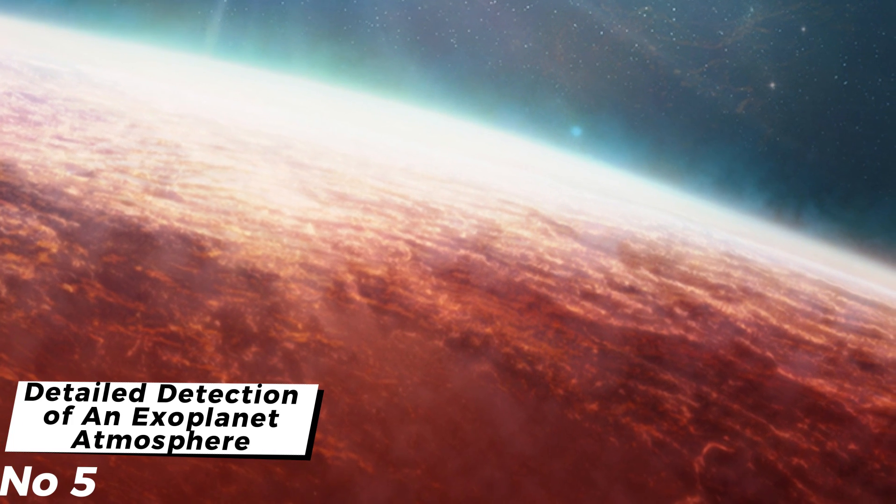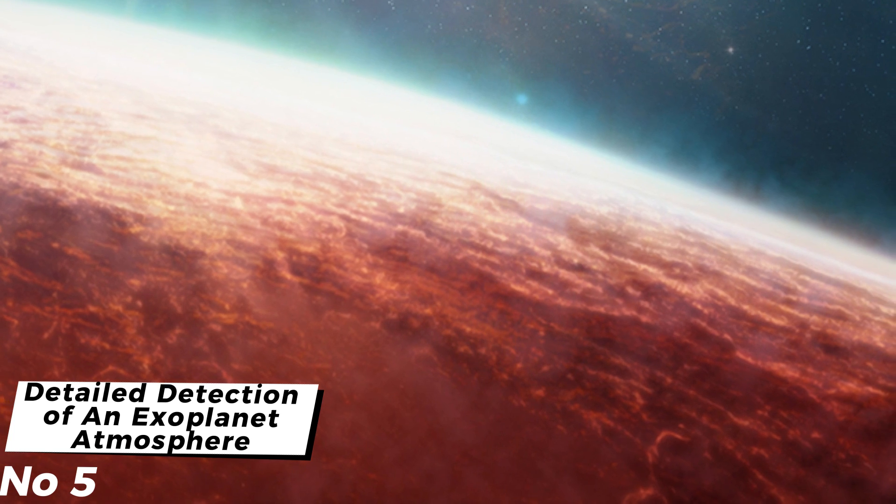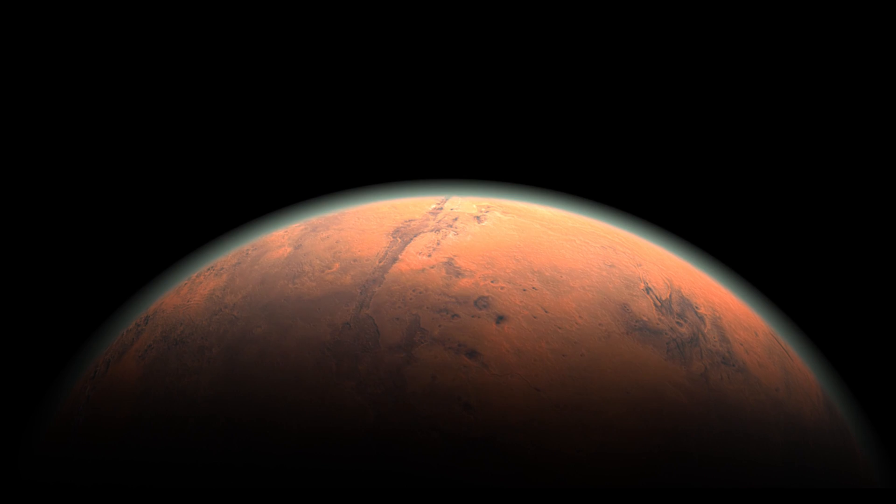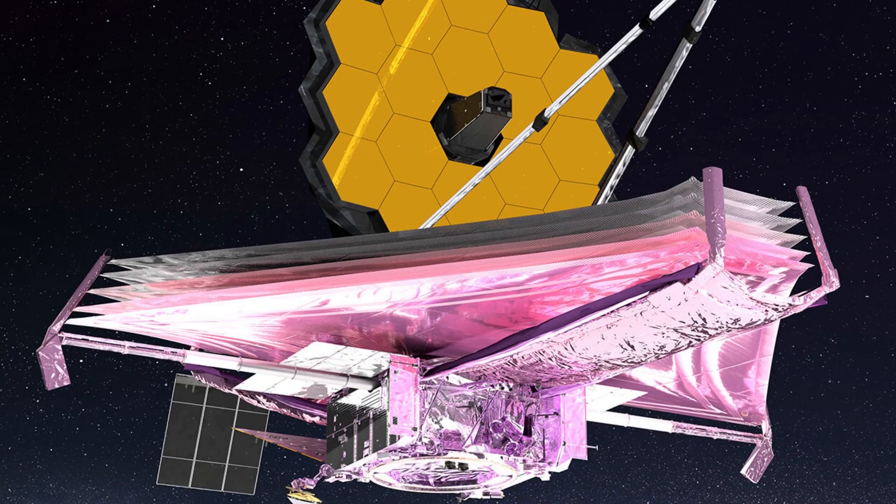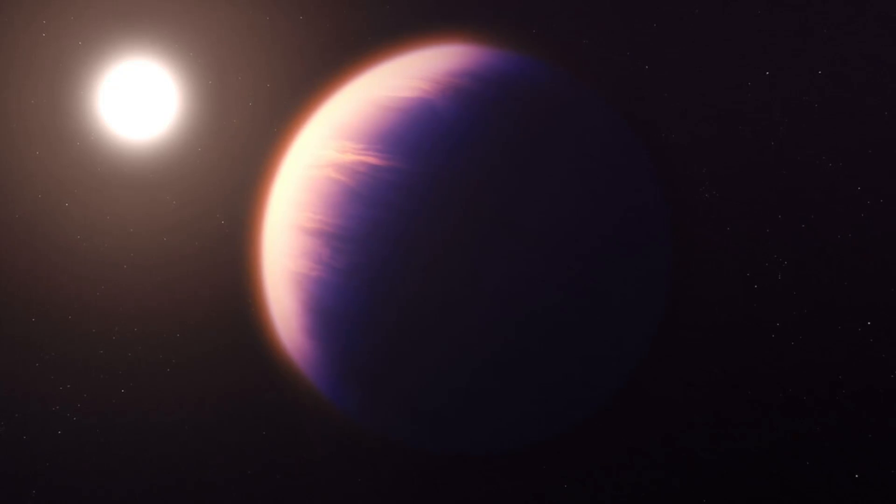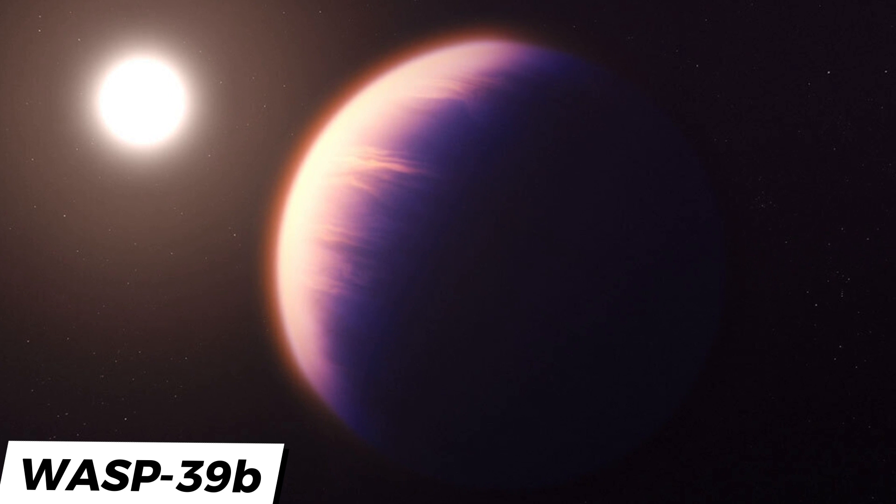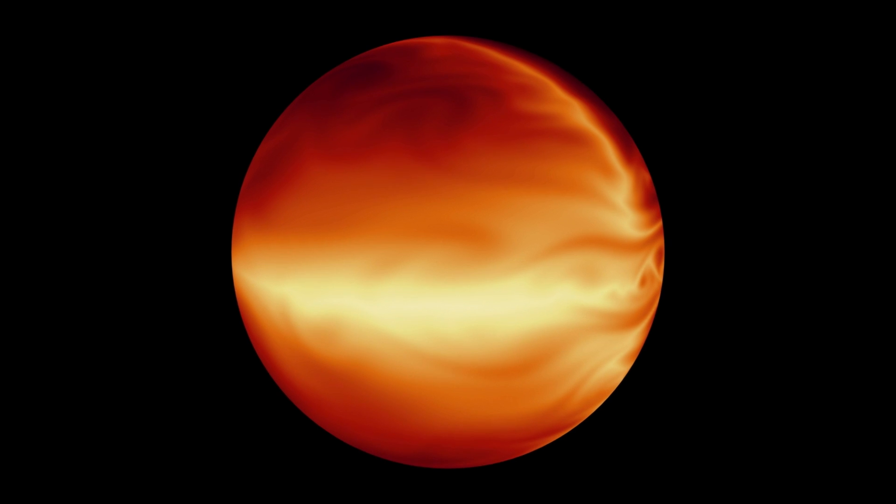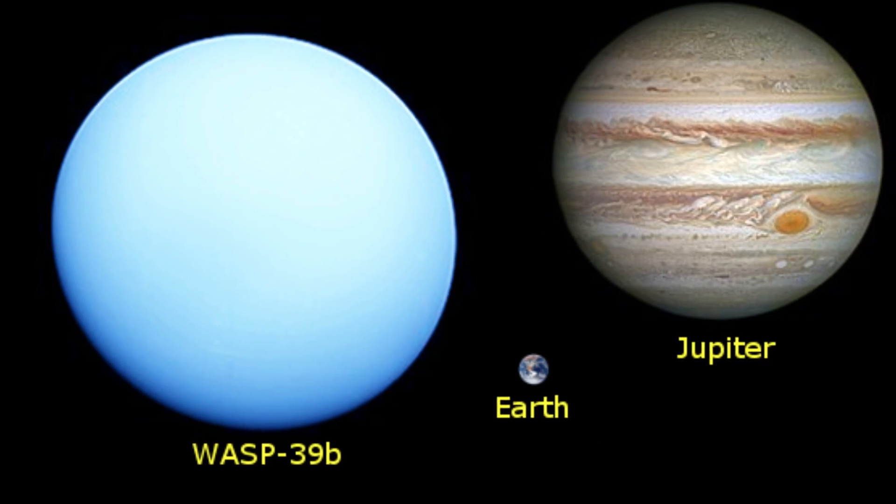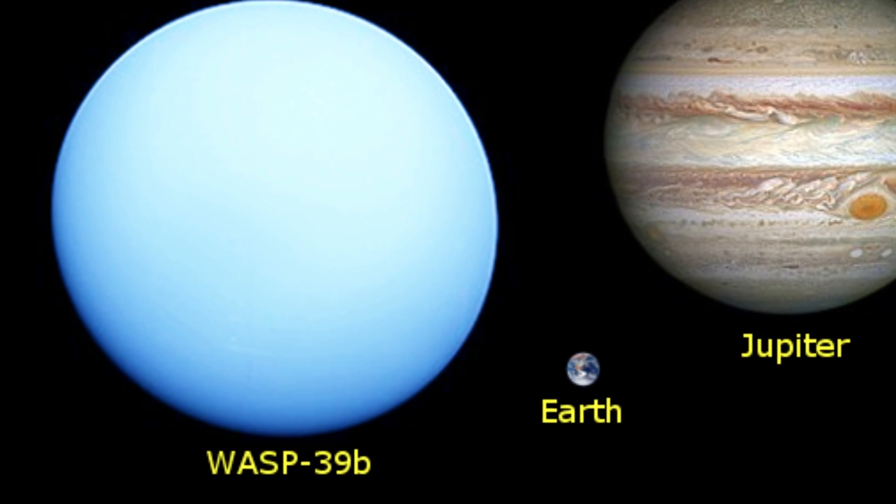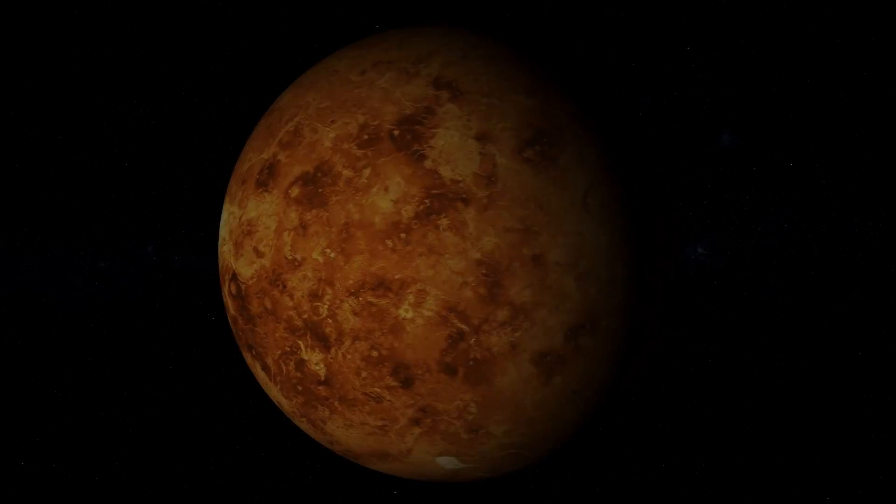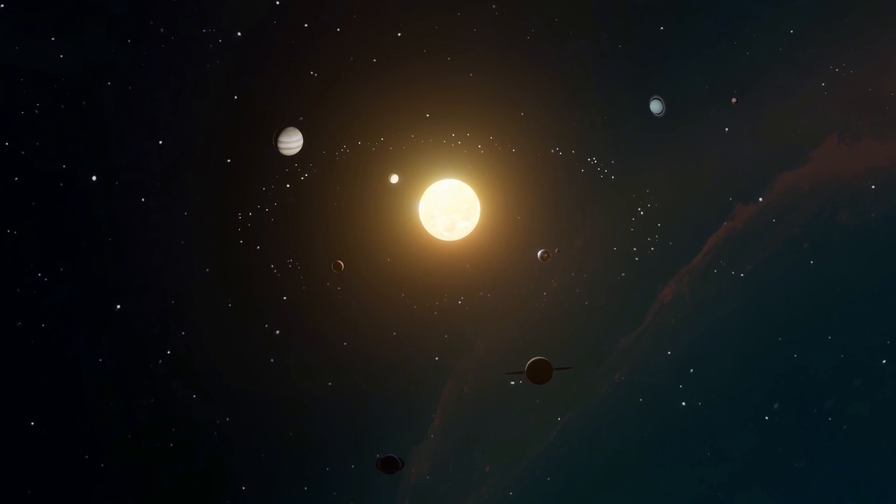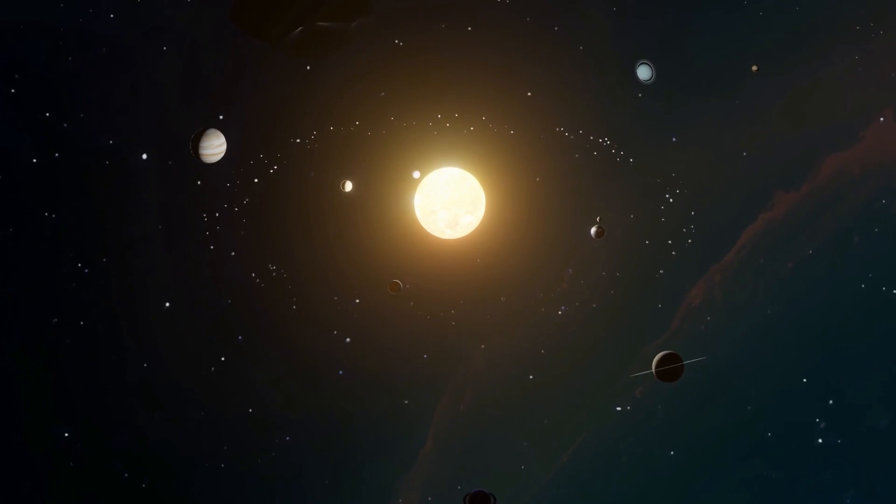Number 5: Detailed Detection of an Exoplanet Atmosphere. A planet orbiting a star in the constellation Virgo is one of the most explored worlds outside our solar system, all thanks to the Webb telescope. The planet, called WASP-39b, is about 700 light-years away from Earth. It is a hot Jupiter-type planet, meaning that it is a gas giant planet similar in size to Saturn. It orbits its host star at a ridiculously close distance, almost 8 times closer to its host star than Mercury is close to the Sun.